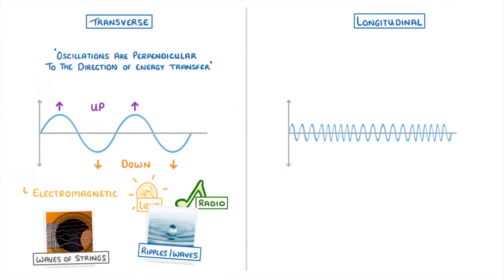Longitudinal waves, on the other hand, have oscillations that are parallel to the direction of energy transfer. This one's a bit trickier to get your head around, but basically it leads to some regions that are more spread out, and other regions that are more compressed, because the wave's vibrating back and forth.